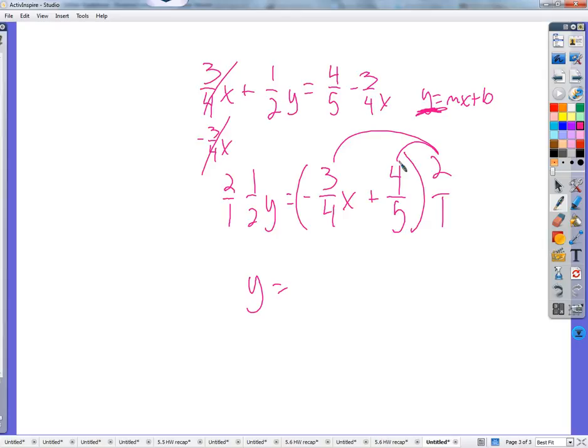All we need to do is remember to distribute two over one to both of these things. How do we multiply fractions? Straight across. Good. So, two times three. It's a positive two times a negative fraction. So we'll do a negative fraction. Two times three is six. One times four is four. That's an x. Negative six fourths x. Two times four is eight. One times five is five. And we can just simplify this fraction. y equals negative three halves x plus eight fifths.